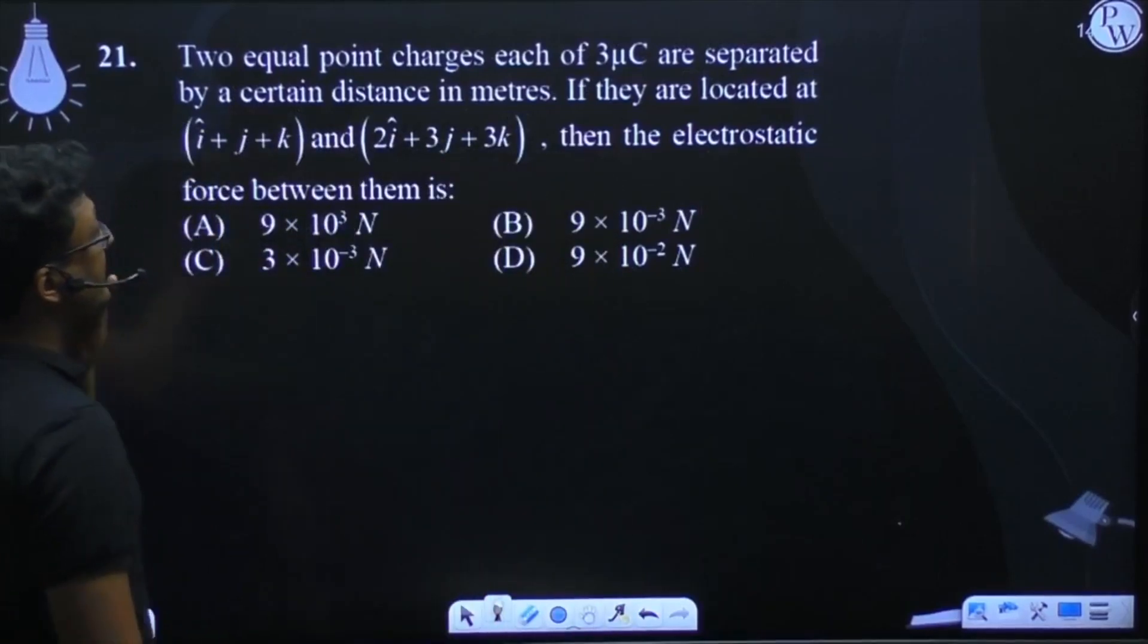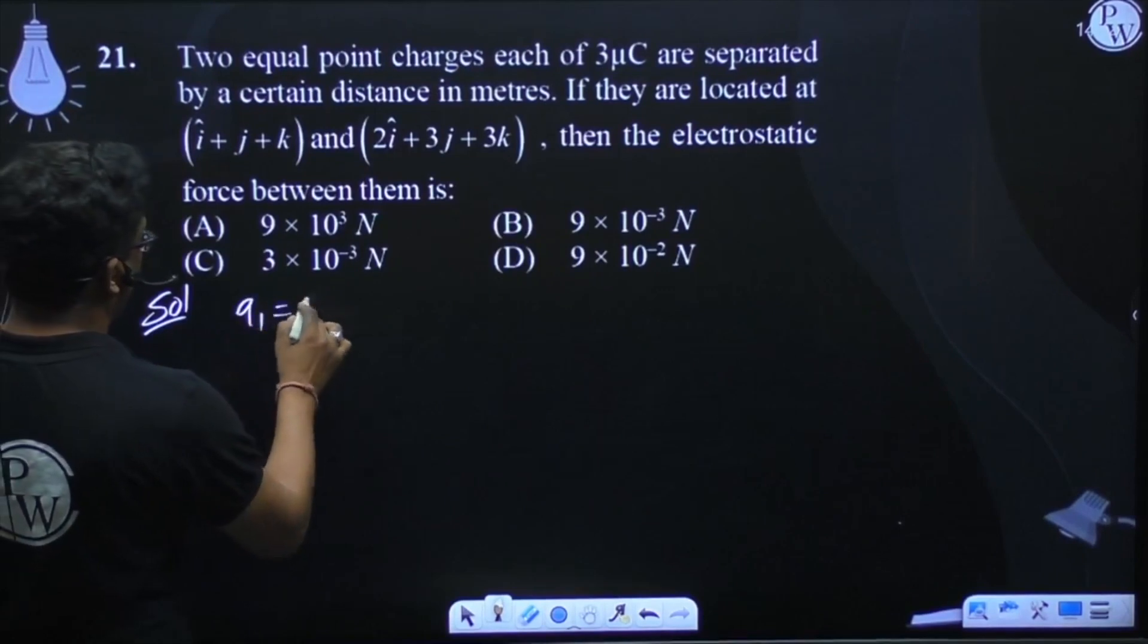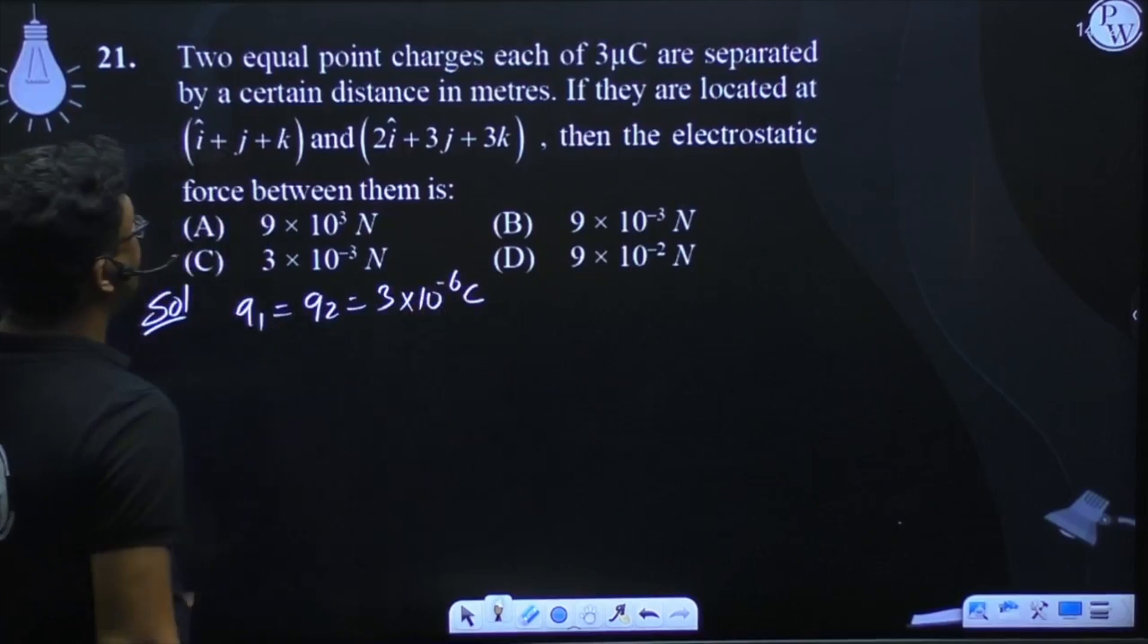Given two equal point charges where q1 equals q2 equals 3 into 10 to the power minus 6 coulomb. The charges are separated by a distance.